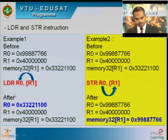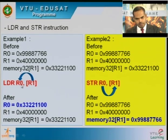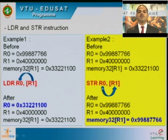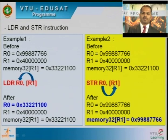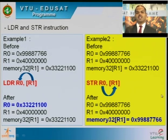Example 2 — STR: Before execution, R0 = 0x99887766, R1 = 0x40000000, Memory32[R1] = 0x33221100. Instruction: STR R0, [R1]. After execution, R0 and R1 are unaltered. What changes is the RAM memory location 0x40000000, which now holds the value 0x99887766 — the value of R0 has been stored to the RAM memory location pointed to by R1.